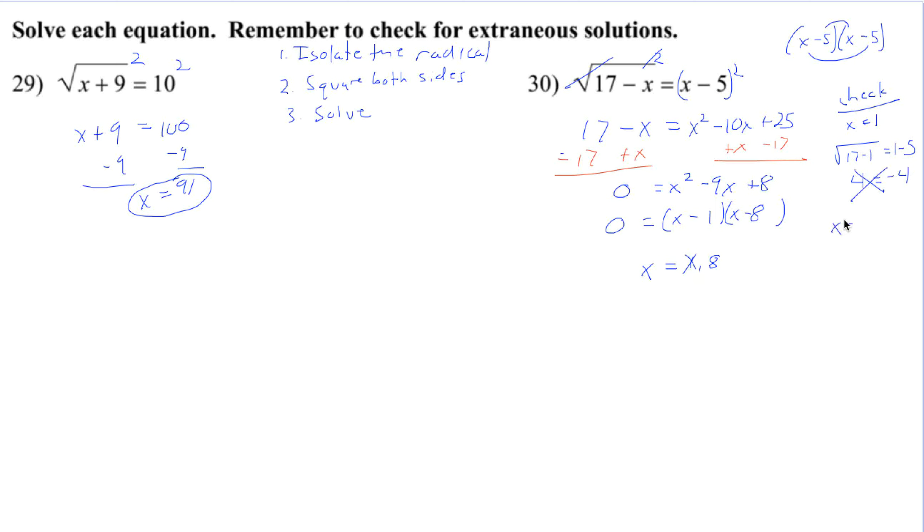Now we're going to try checking x equal to 8. The square root of 17 minus 8. And we're checking, does that equal 8 minus 5? 17 minus 8 is 9. The square root of 9 is 3. 8 minus 5 is 3. It works. So our answer is x equals 8.